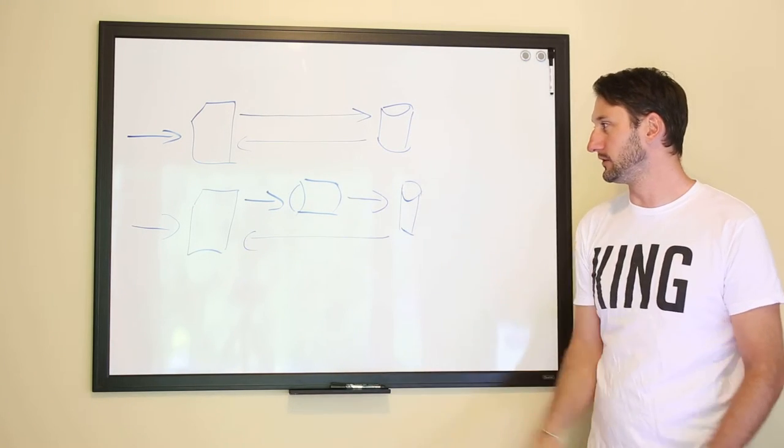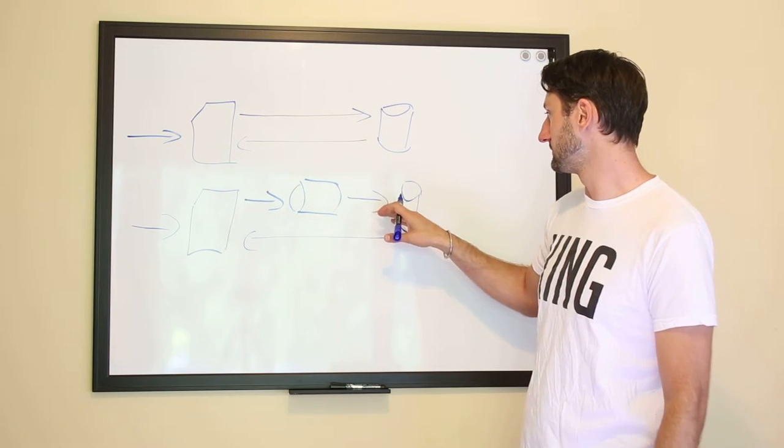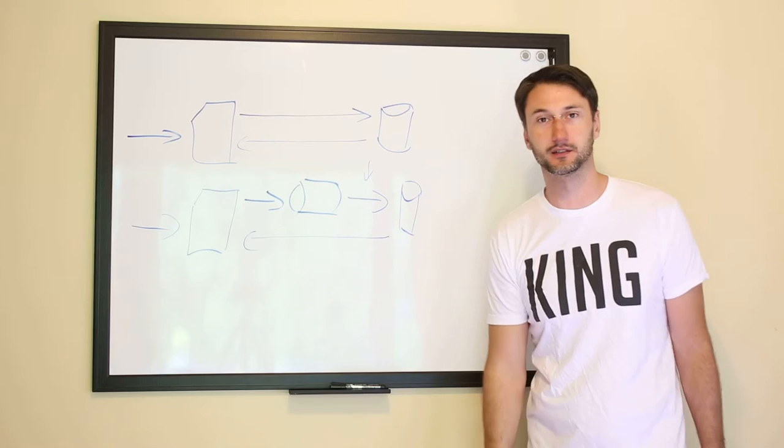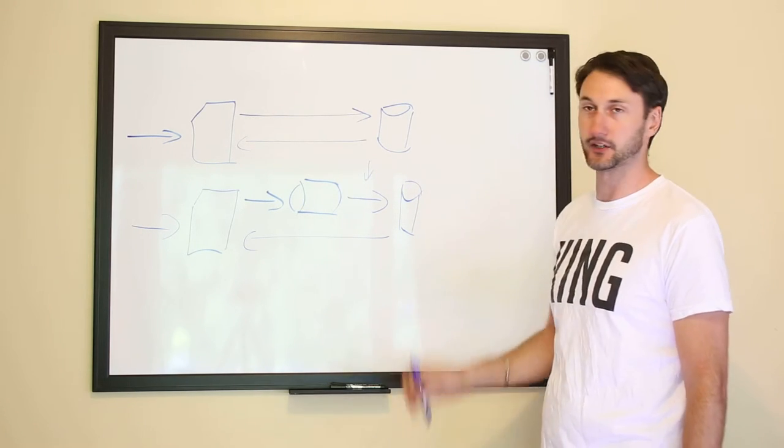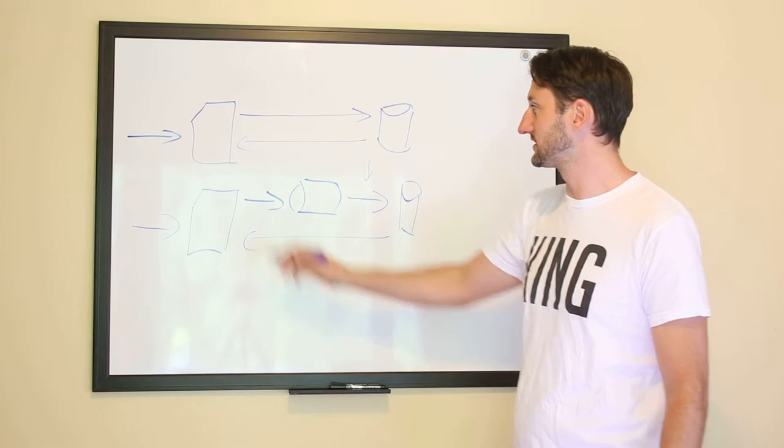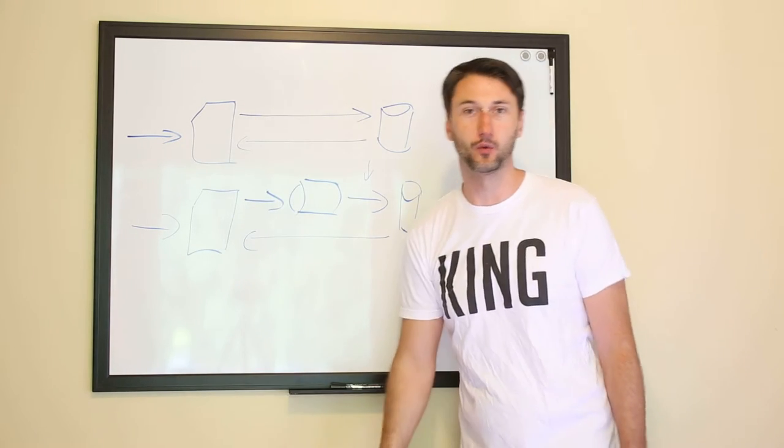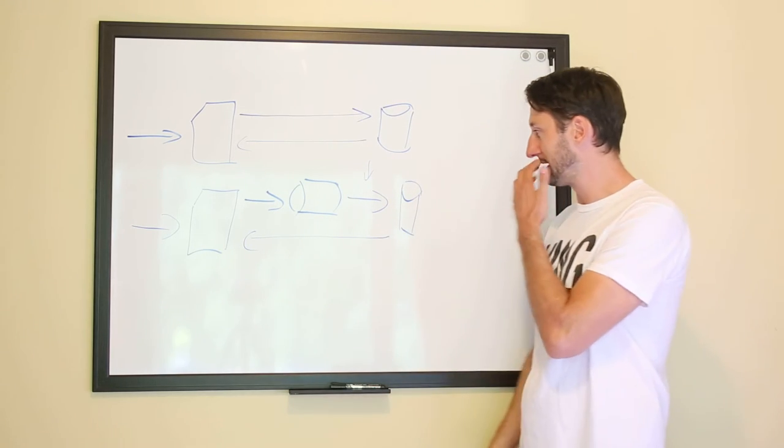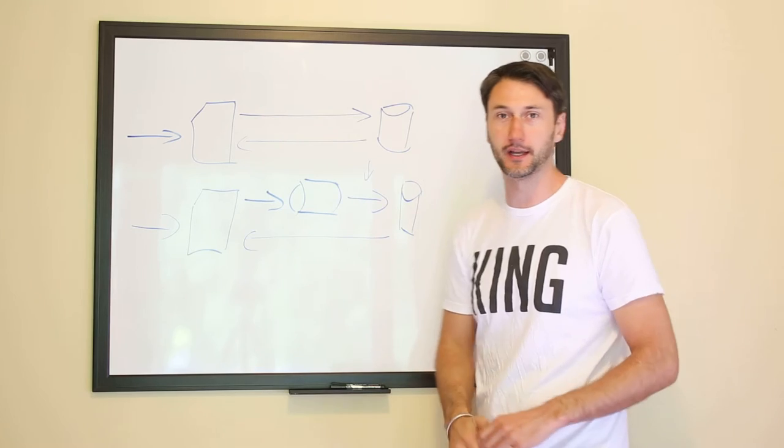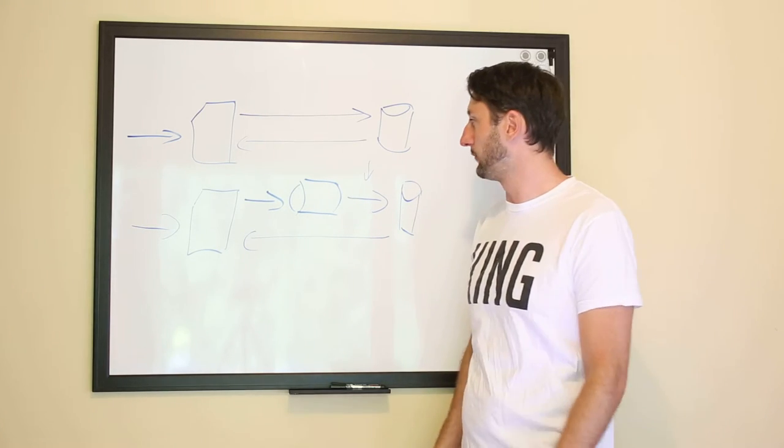So why you would do this is this really enables control over the actual writes to the data store. The typical bottleneck, especially on the cloud, will be actually the data store. It's super easy to add more web application nodes, so stand up more web servers. It's much trickier to create scalable data architecture. We'll talk about that more in the future.